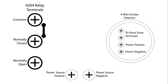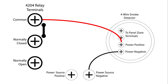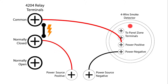You will have two terminals on the smoke detector that go to a zone on the panel. The other two terminals are for power. Connect the negative from your smoke to the negative of your power source. Next, connect the positive of your smoke to the common terminal of the relay. Lastly, connect the positive of your power source to the normally closed of your relay. The circuit will be complete and your smoke will have power.